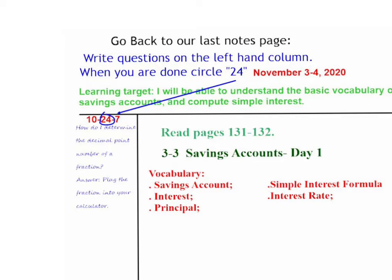Let's go back to our last notes page from the first day of this week, savings accounts day one, and write a question in our left-hand column. I have an example here that you are welcome to use. It is: how do I determine the decimal point number of a fraction? And the answer is, you just plug the fraction into your calculator as a division problem and hit enter.